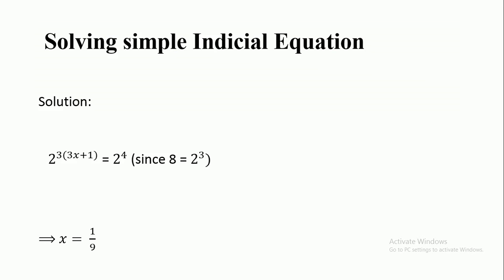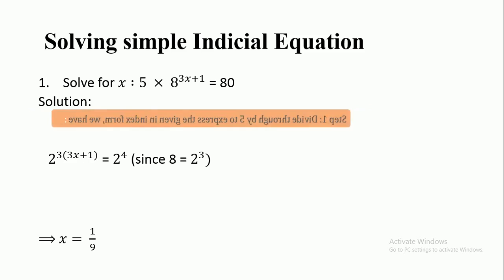How do we solve simple indicial equations? The first example is: solve for x when 5 × 8^(3x+1) = 80. What is the first step? The first step is to divide through by 5 to express the given equation in index form.